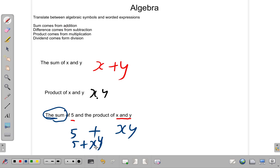5 plus x multiplied by y. So we have the sum. In this case, the sum is a plus of two things: of 5 and of the product of x and y.